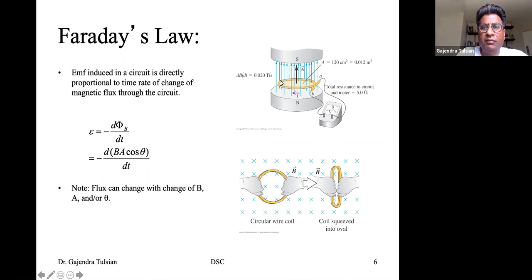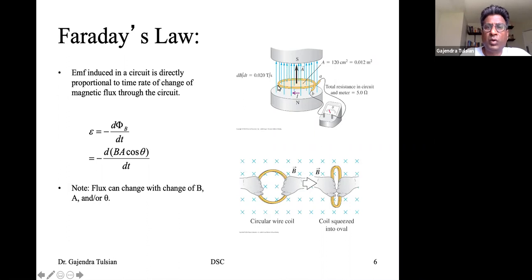The EMF — the voltage induced in this loop — is equal to minus dΦ/dt, which is the time rate of change of the magnetic flux. Magnetic flux is the number of field lines threading this loop. The EMF will be maximum if the loop encloses all the field lines. This is Faraday's Law: the EMF induced in a loop of wire is equal to minus the time rate of change of the magnetic flux.